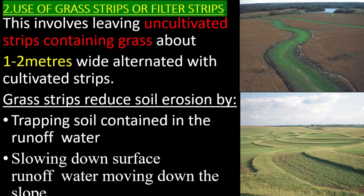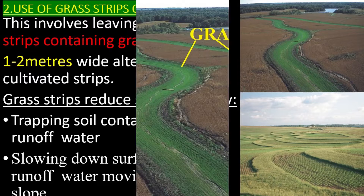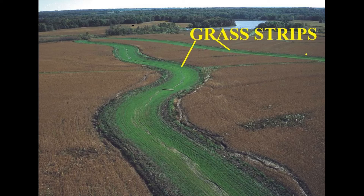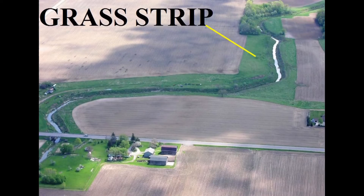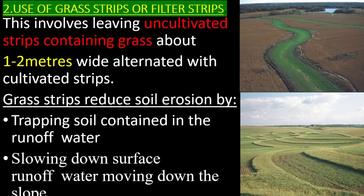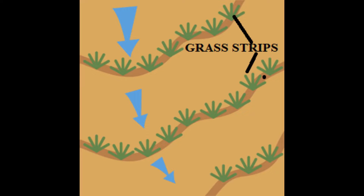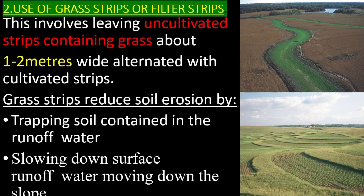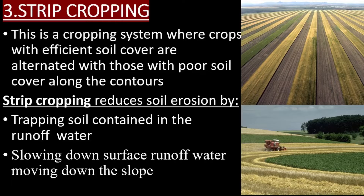Use of grass strips or filter strips: this involves leaving uncultivated strips containing grass about one to two meters wide, alternated with cultivated strips. Grass strips reduce soil erosion by trapping soil contained in the runoff water and slowing down surface runoff water moving down the slope.